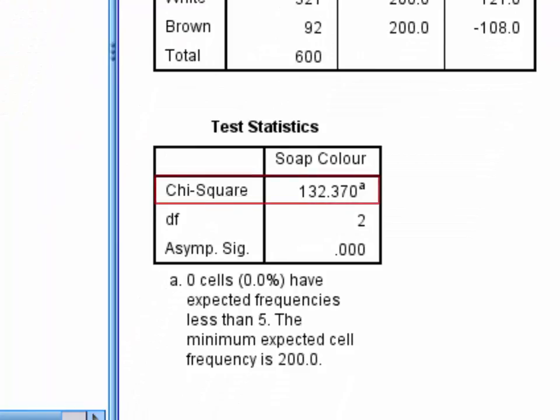The second table contains the chi-square test statistic and associated degrees of freedom and significance level. Here, the significance level is less than 0.05, which we typically use as alpha, and we can thus conclude that the color preferences we observed differed significantly from what would be expected in a situation where all three colors were equally popular.